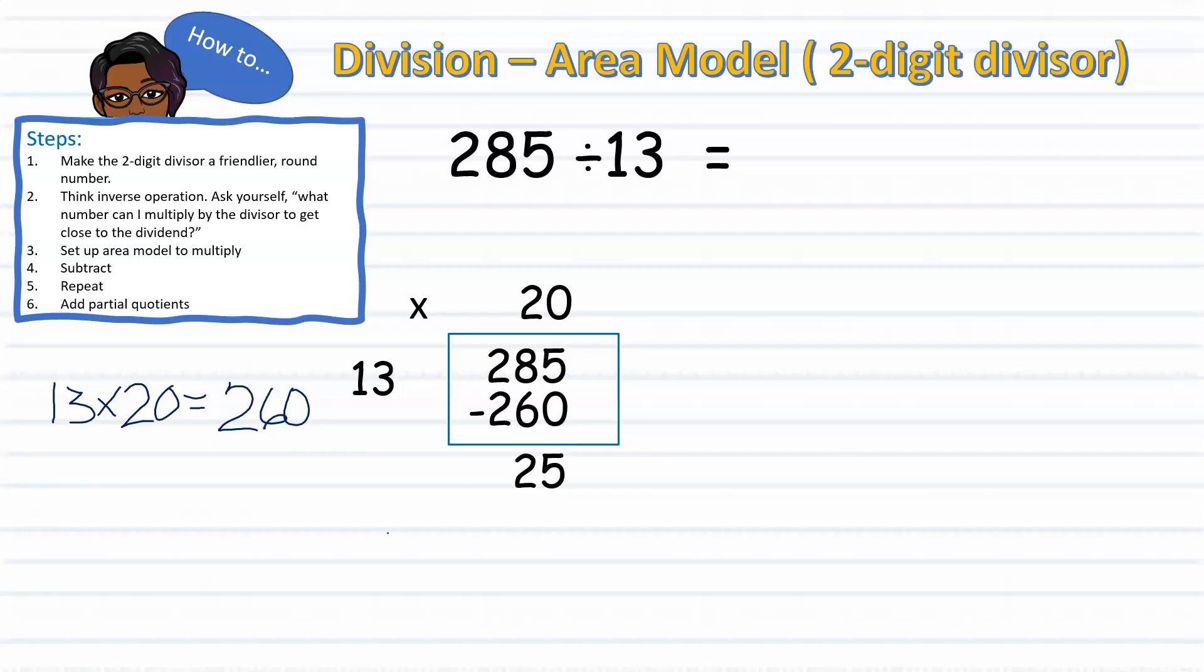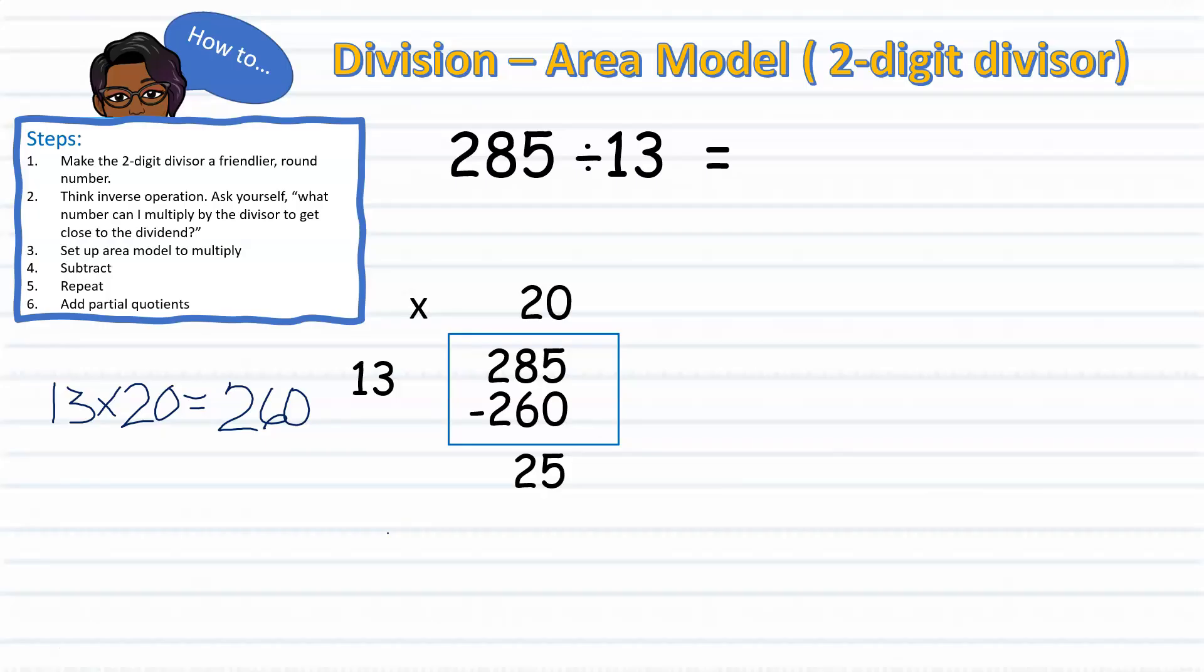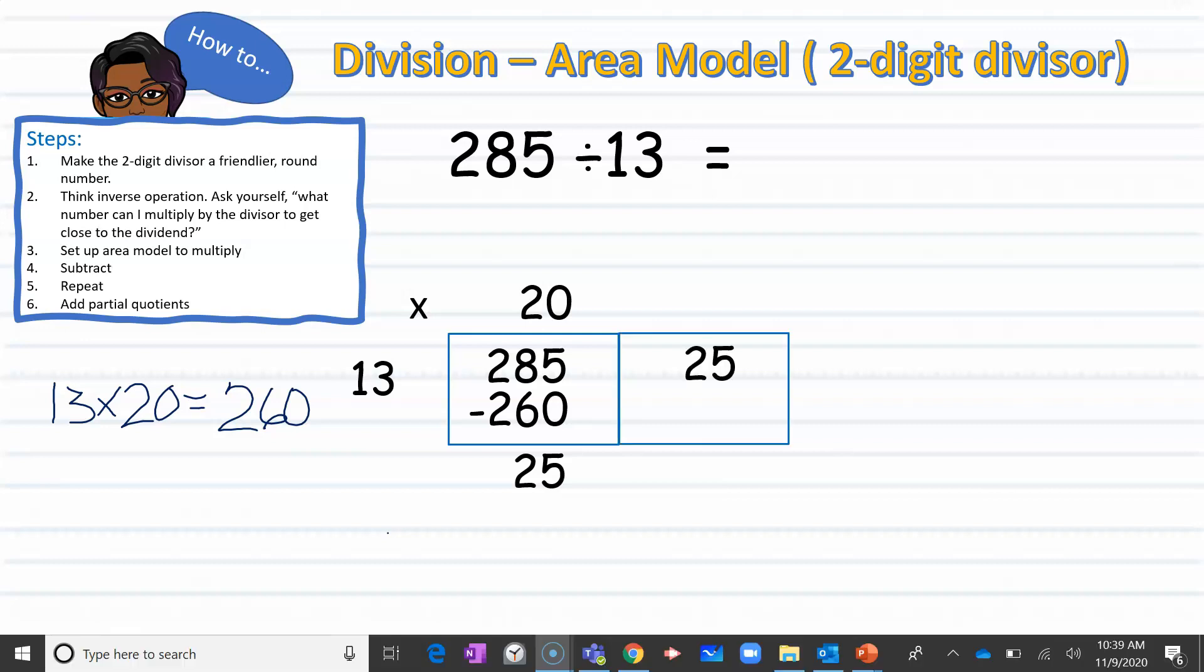Being that 25 is larger than the divisor, I will continue to divide by extending my area model. Ready to divide 25 by 13, keeping in mind we're working with friendly numbers. So, we think to ourselves, 10 times what can get me close to 25? Well, we know that 10 times 2 equals 20.